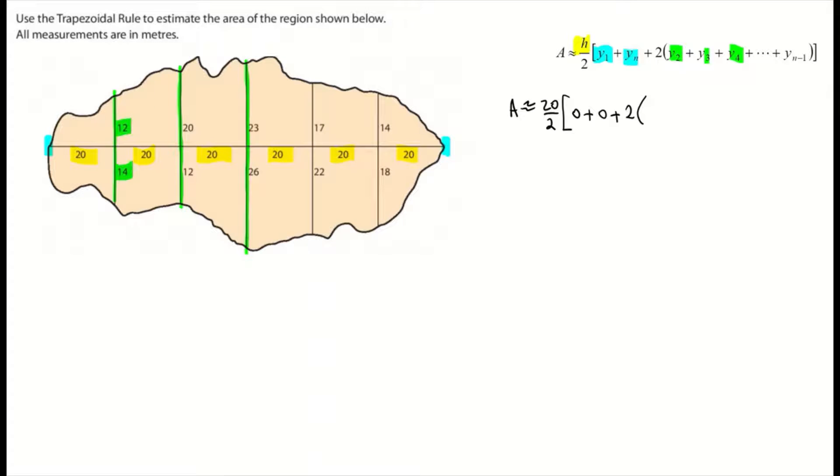So my Y2 is 26. My Y3 is going to be the 20 plus the 12, which is getting me up to 32. My Y4 is going to be the 23 plus the 26, which is 49. My next height is going to be the 17 plus the 22, which is 39. And finally, my Yn minus 1, which is my second last height, which is going to be the 14 and the 18 put together. So I add them and I get 32.